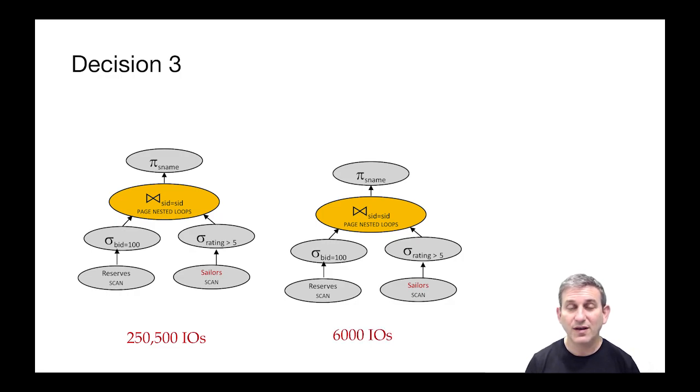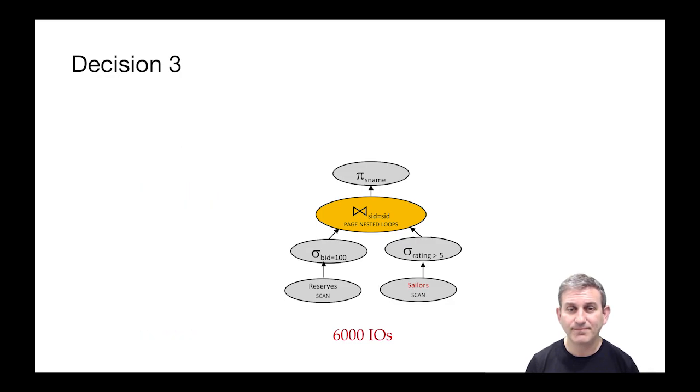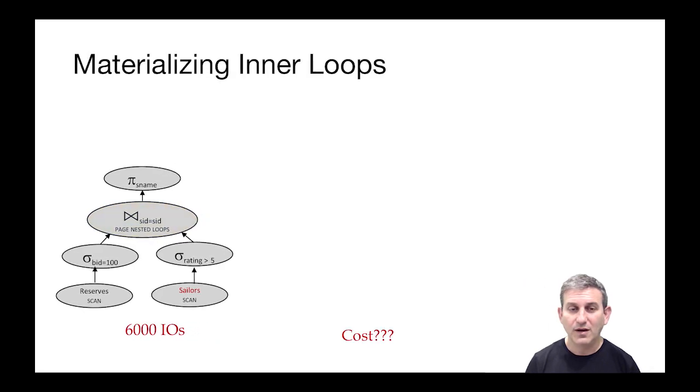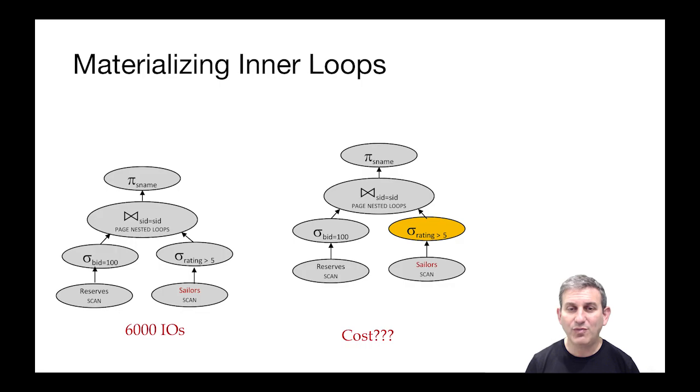We had this problem before that when we push the selection down on the right-hand side of the nested loops join, it didn't do us any good. But what if we put a materialization operator above that selection and we did the nested loops on the result of the selection? That would seem to save us the problem that we're going to scan Sailors for every pageful of Boats. Now we're just going to scan the materialized result for every pageful of Boats.